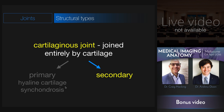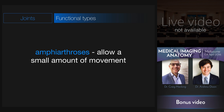Now let's look at the secondary cartilaginous joints. These ones are composed entirely of fibrocartilage and are termed symphyses. Functionally speaking, they are amphiarthroses, in that they allow a very small amount of movement, but definitely do allow movement.